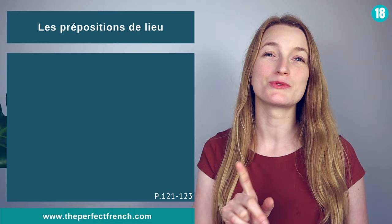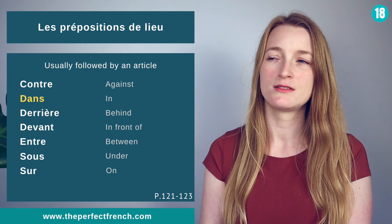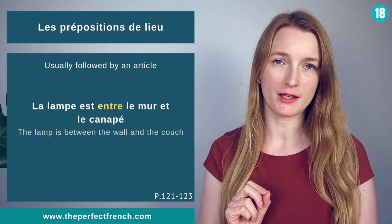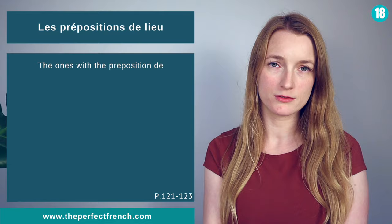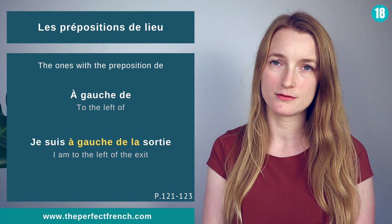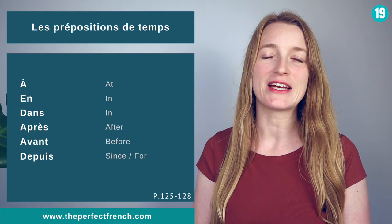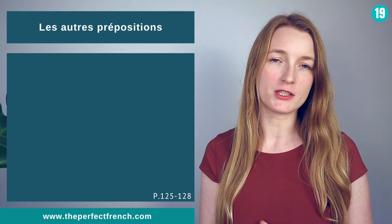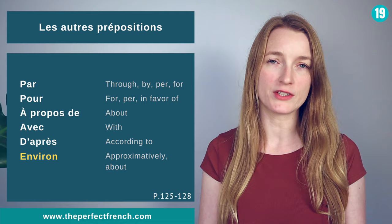Les prépositions de lieu — prepositions of place — are usually followed by an article: contre, dans, derrière, devant, entre, sous, and sur. La lampe est entre le mur et le canapé. Some prepositions of place are followed by de: à gauche de. Je suis à gauche de la sortie. Prepositions of time: à, en, dans, après, avant, depuis. Other common prepositions: par, pour, à propos de, avec, d'après, environ. Il va pleuvoir d'après la météo.